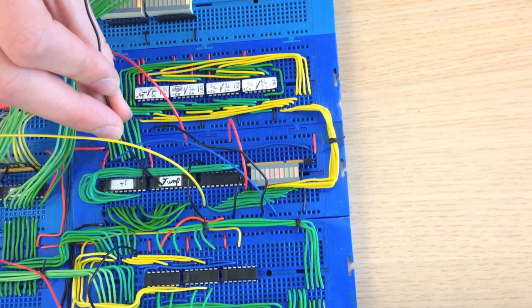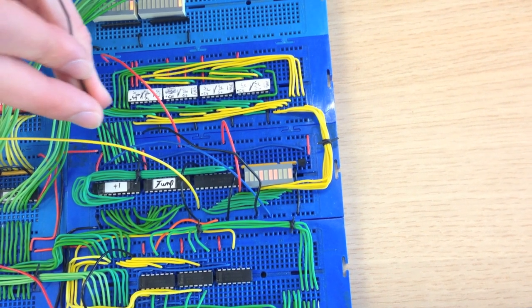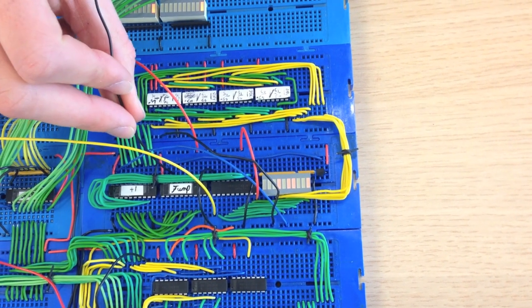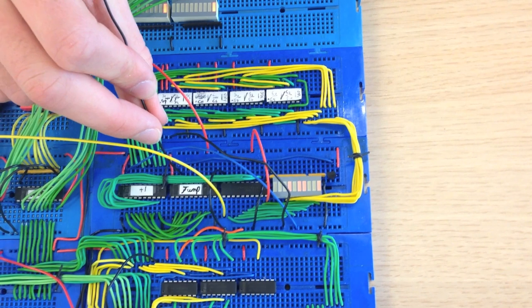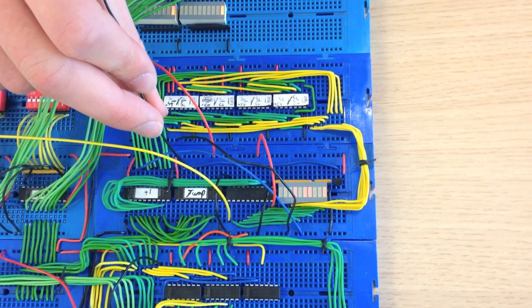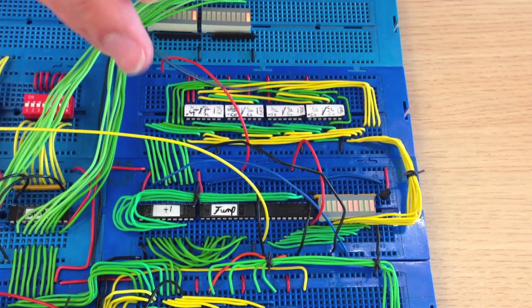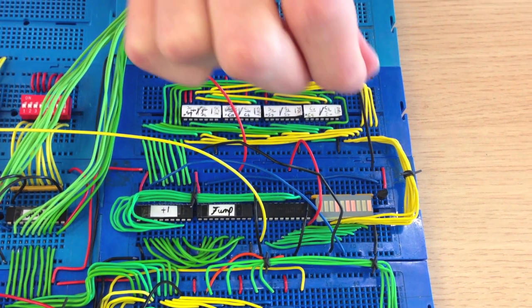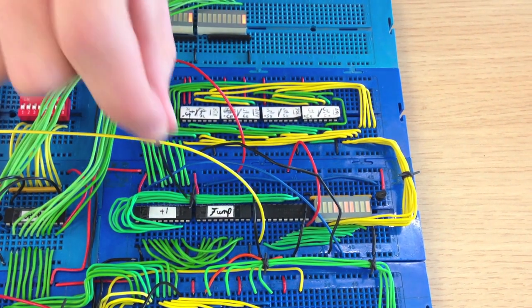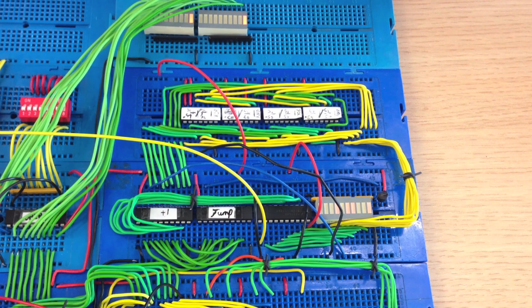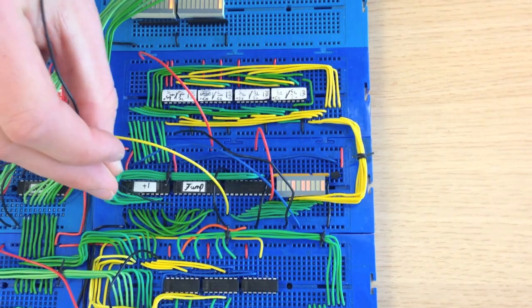We will have another input to this jump transceiver here. So that's if we wanted to put a value on there if we wanted to jump to a different instruction in the instruction register. So we have a control bit here which is inverted by this transistor here, so that only one of these two transceivers receives a zero on its active low, enabling the output.